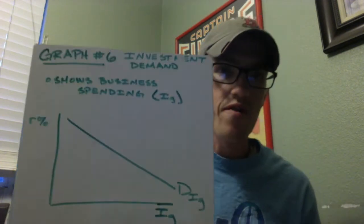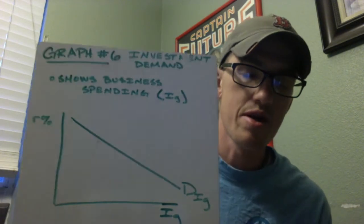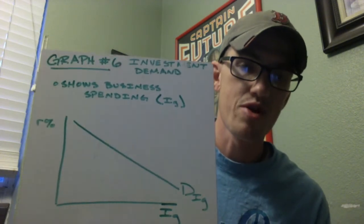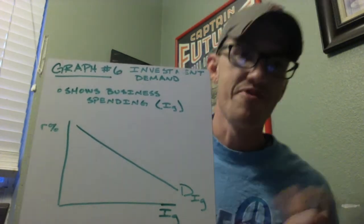Investment Demand is a graph showing business spending, or IG, as it's known in the GDP equation of C plus IG plus G plus XN. This is the IG, so it's business spending.